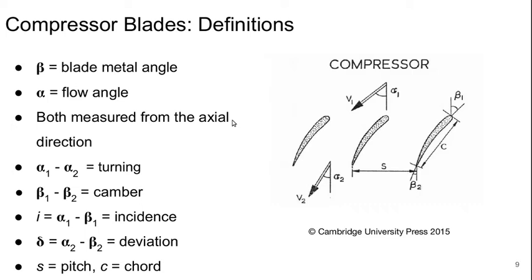Both of these are measured from the axial direction. So the turning of the flow is the difference in blade metal angles, alpha 1 minus alpha 2. And the camber of the blade is the difference in blade metal angles, beta 1 minus beta 2.